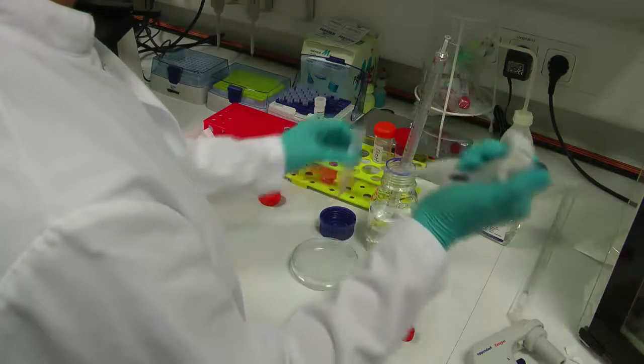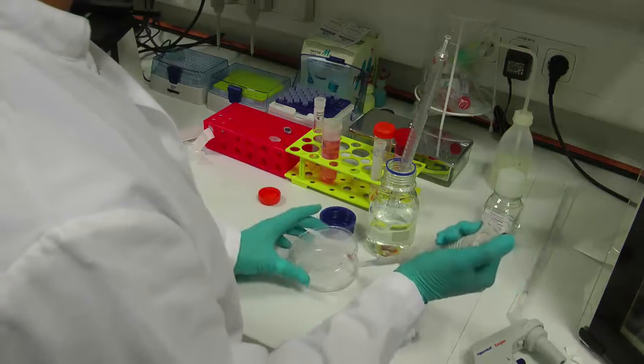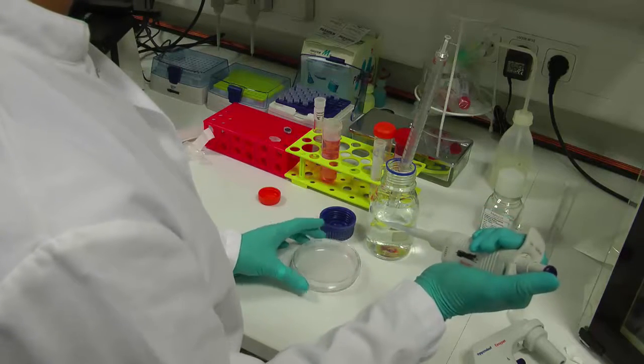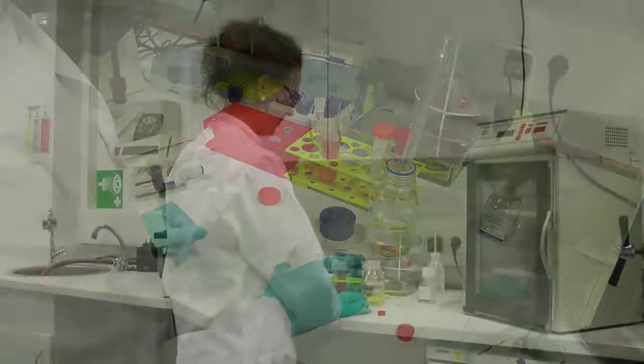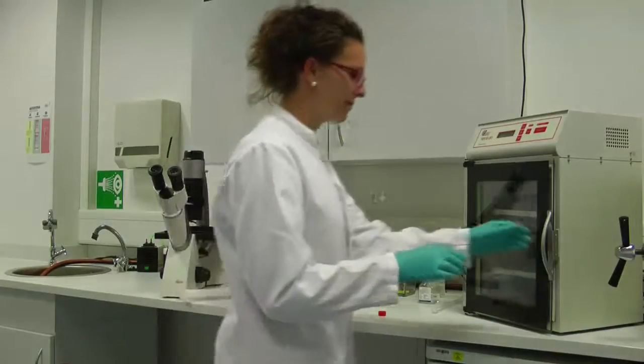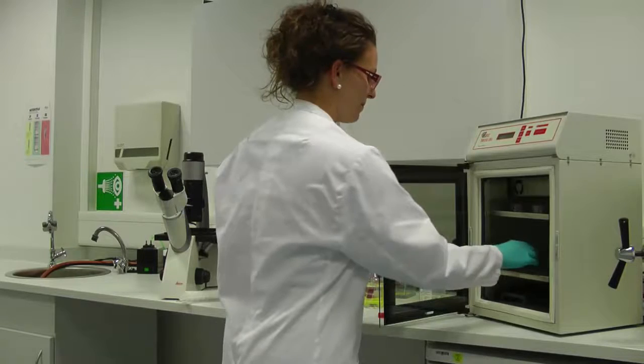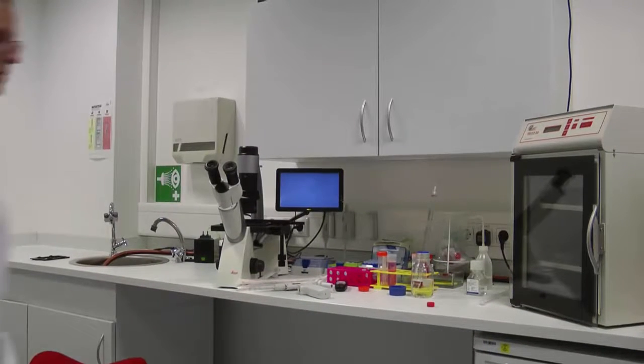Add 3 ml pre-warmed trypsin EDTA and swirl gently to cover all cells at the bottom of the dish. Trypsin in combination with EDTA causes cells to detach from the growth surface. Incubate cells for a few minutes at 37 degrees to detach them.